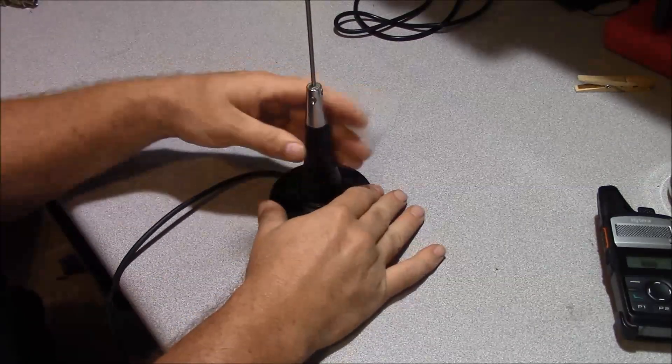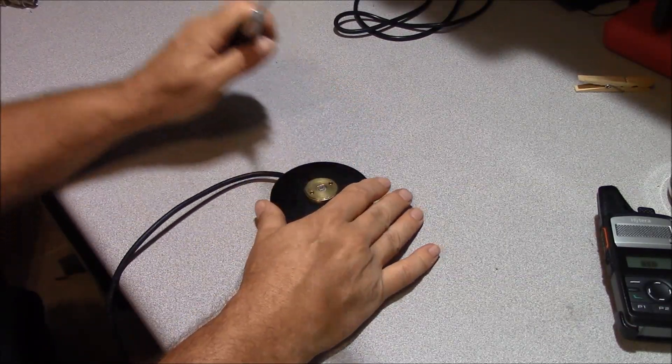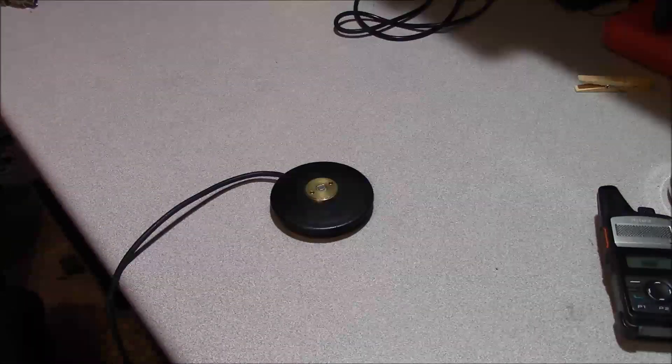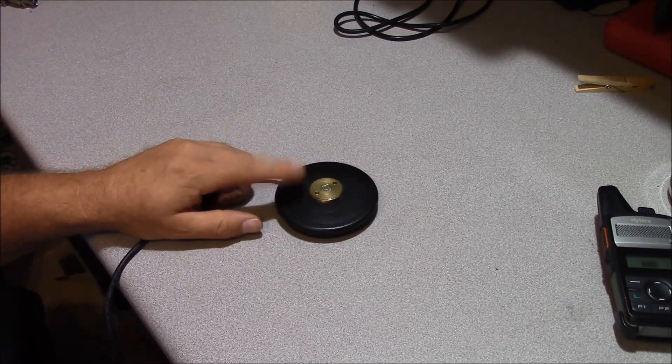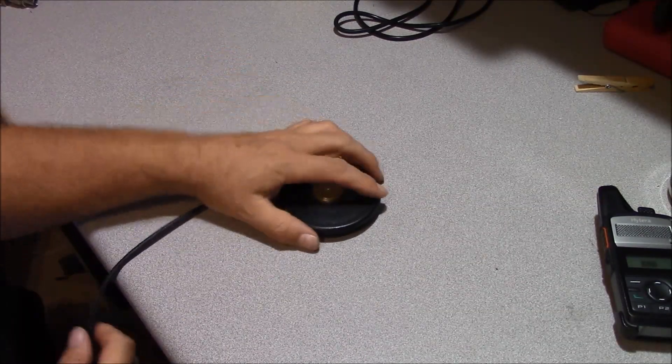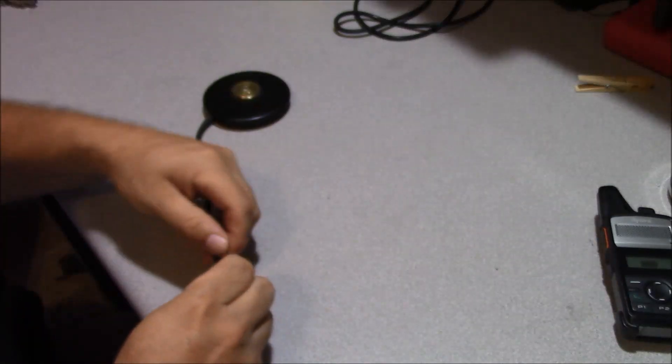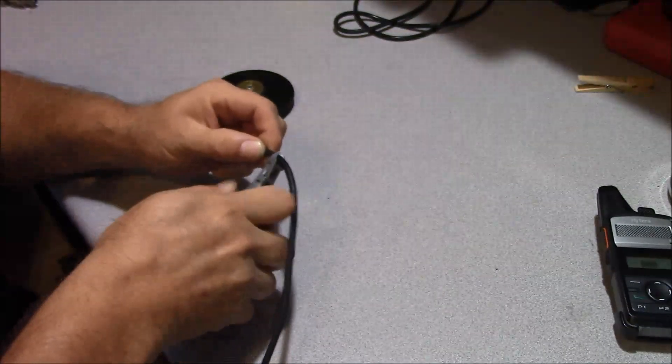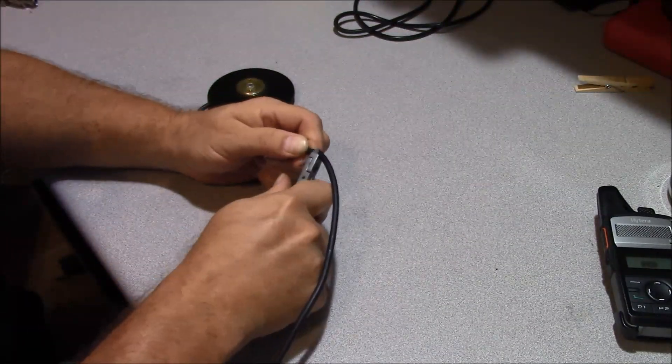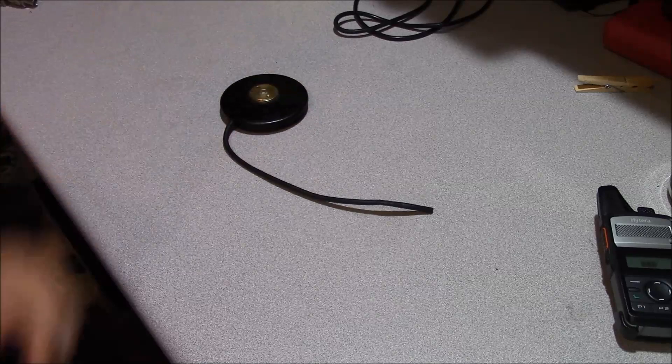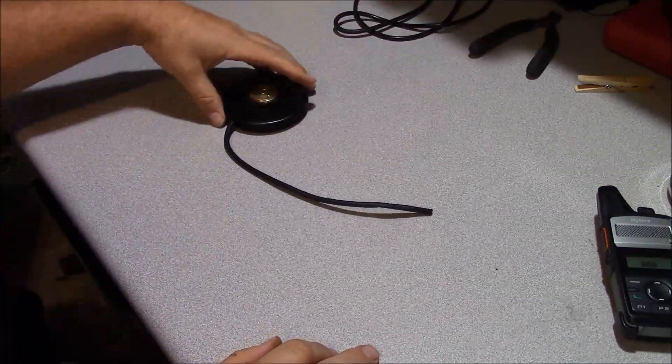To begin with, we're going to go ahead and spin our antenna off. And this is a typical NMO base. And then where our damaged section of coax is here, we're going to go ahead and cut just below it, and that way we get the feed line out of the way so when we work on it, it'll be a lot easier to work with.